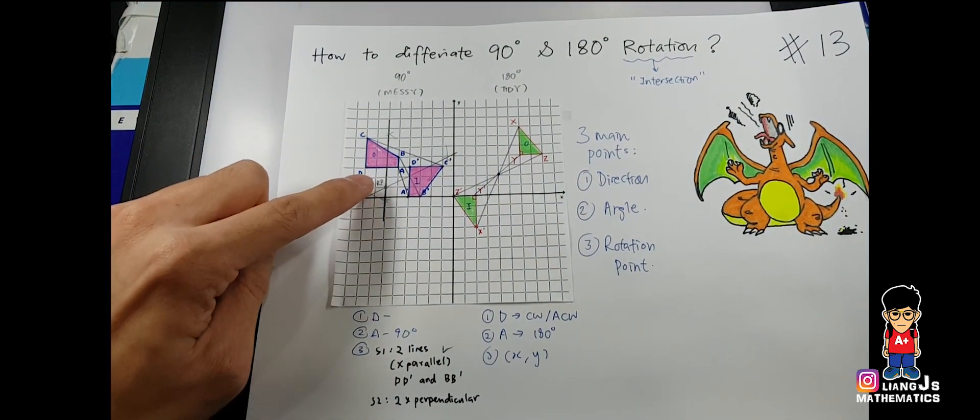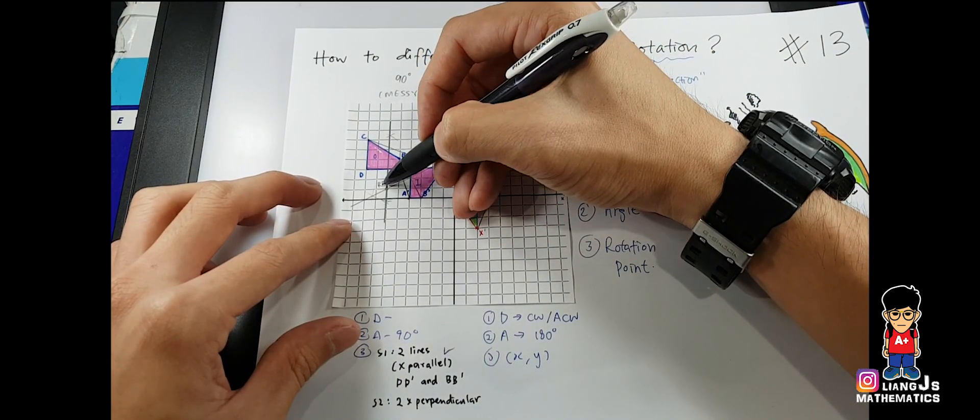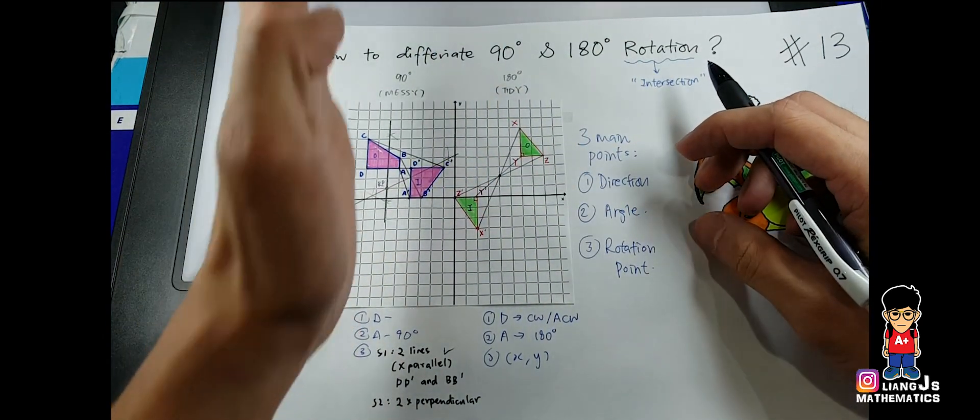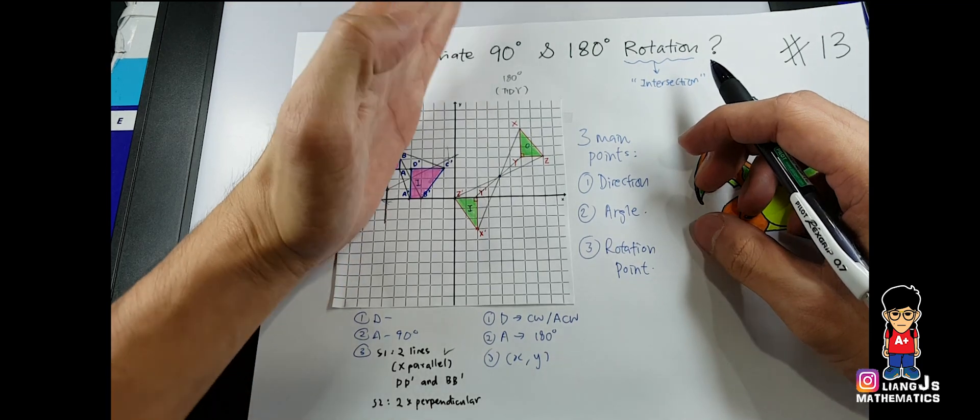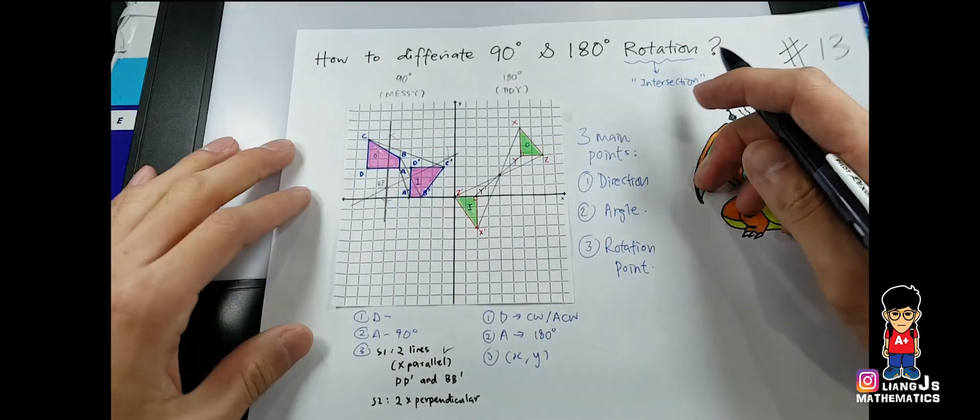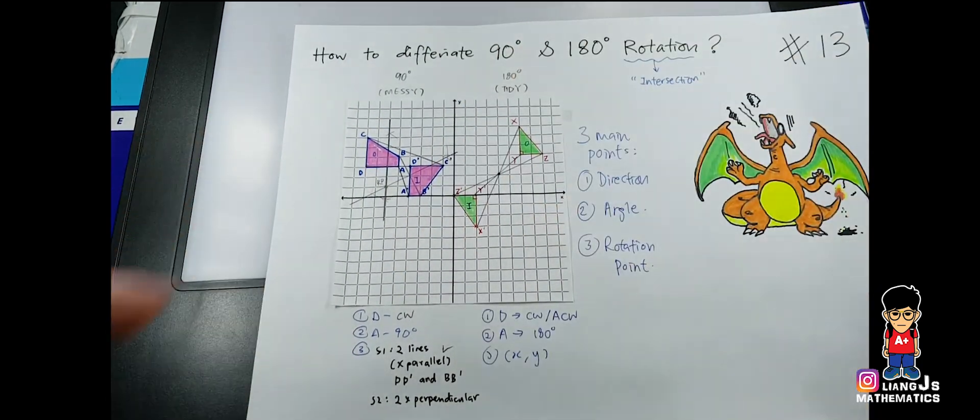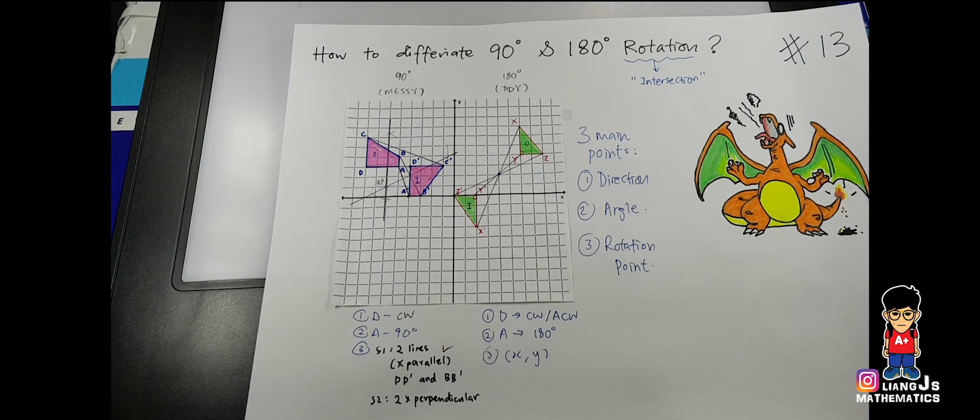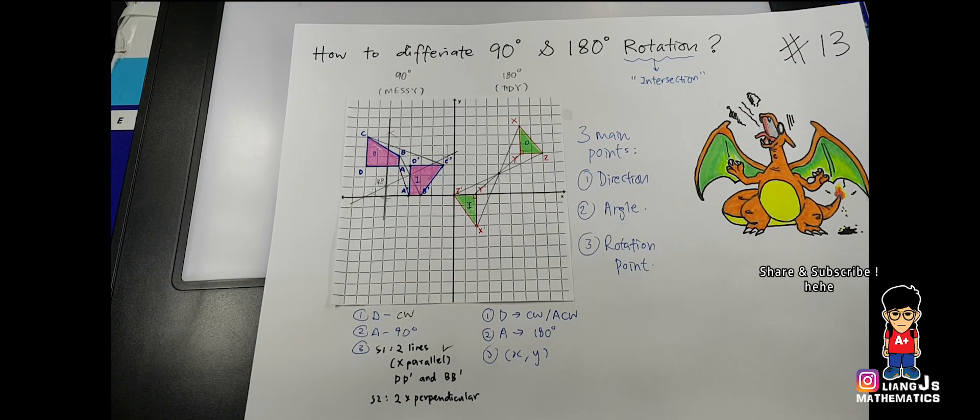And once you get your rotation point, do you notice this is your object and this is your image. And if you go this way, that's clockwise, correct? So you go for clockwise. And that's how we get rotation point in 90 degree and 180 rotation.